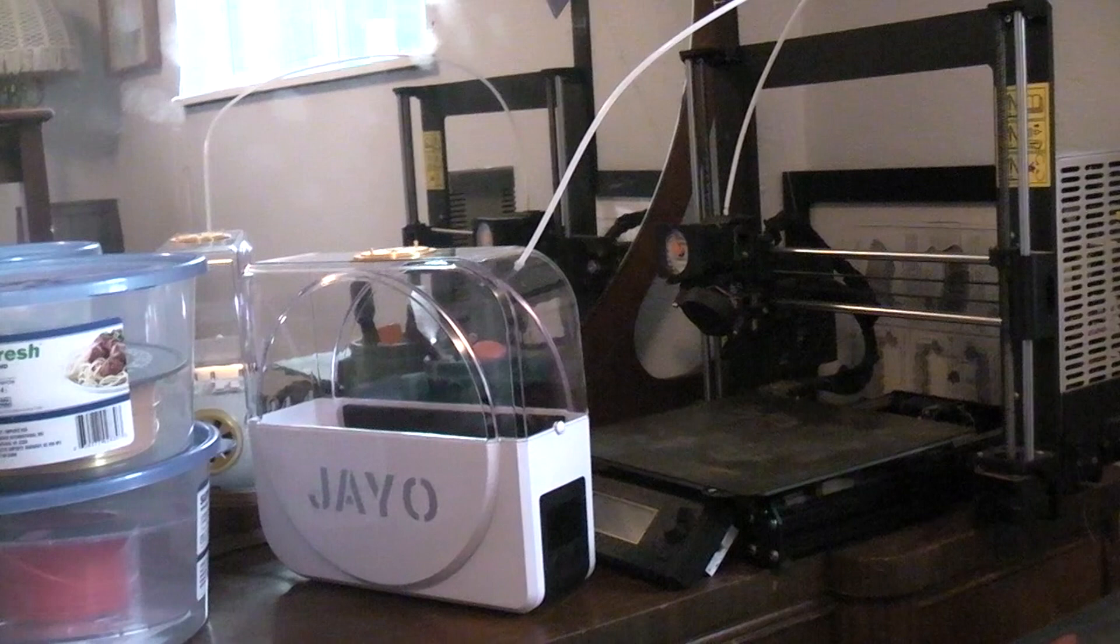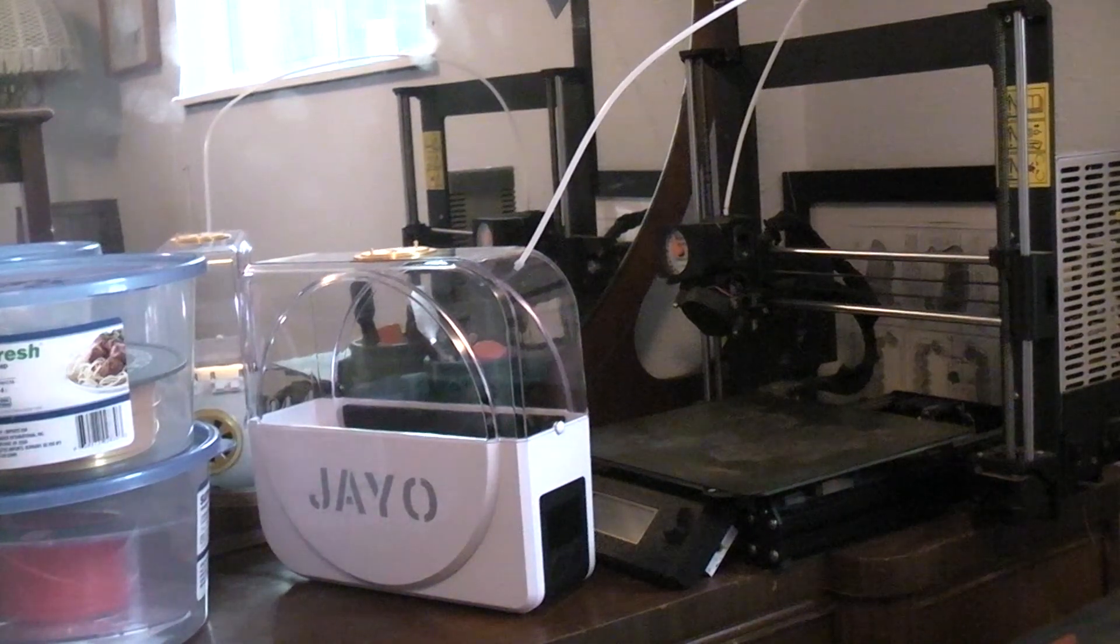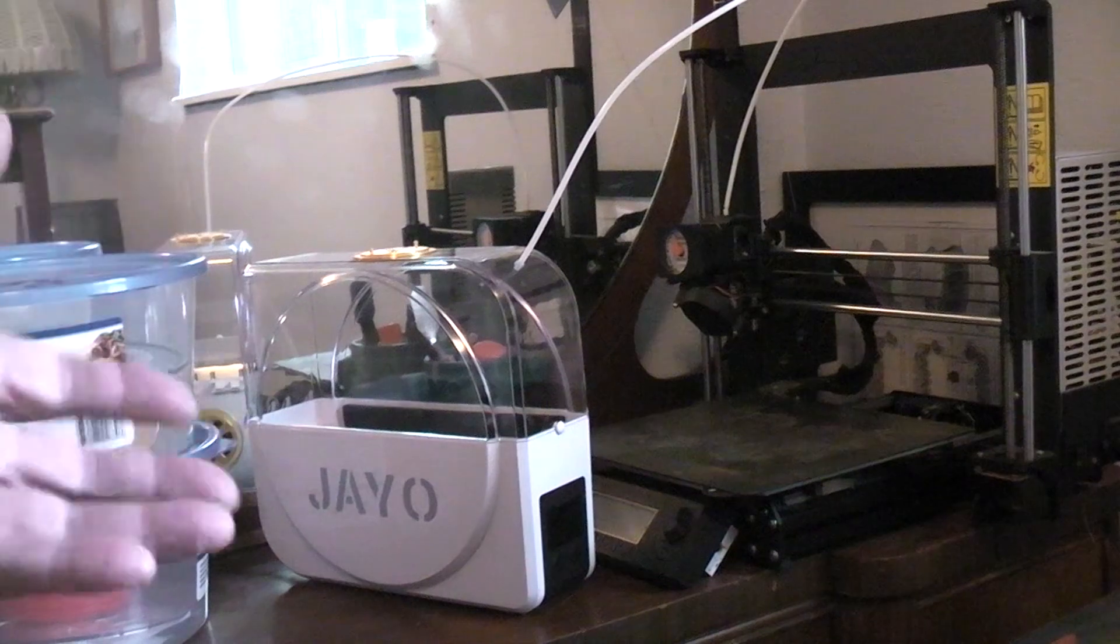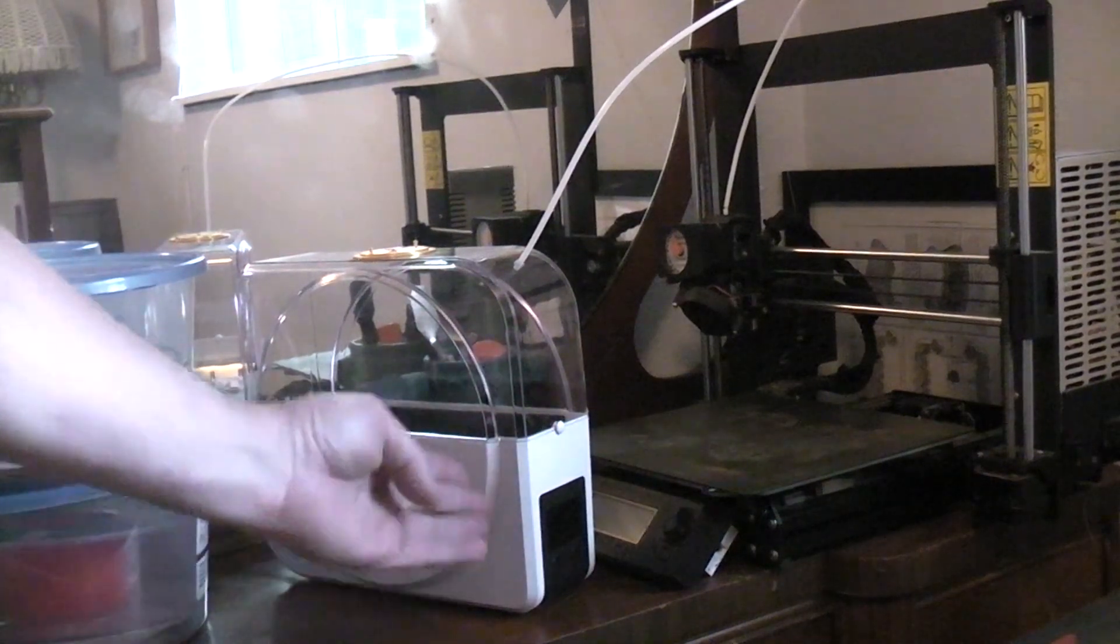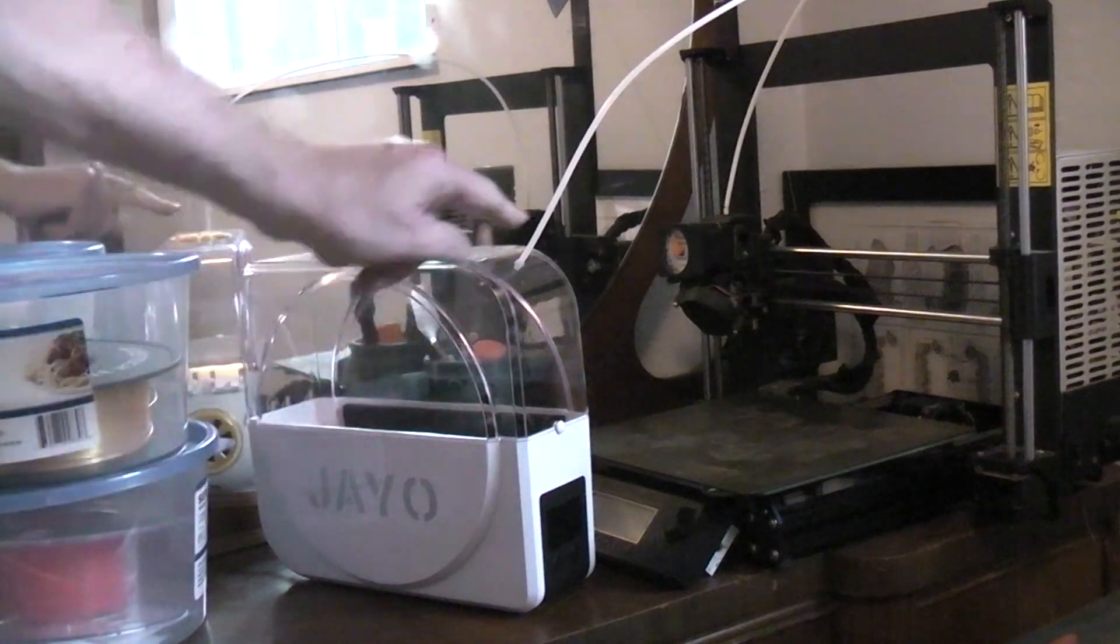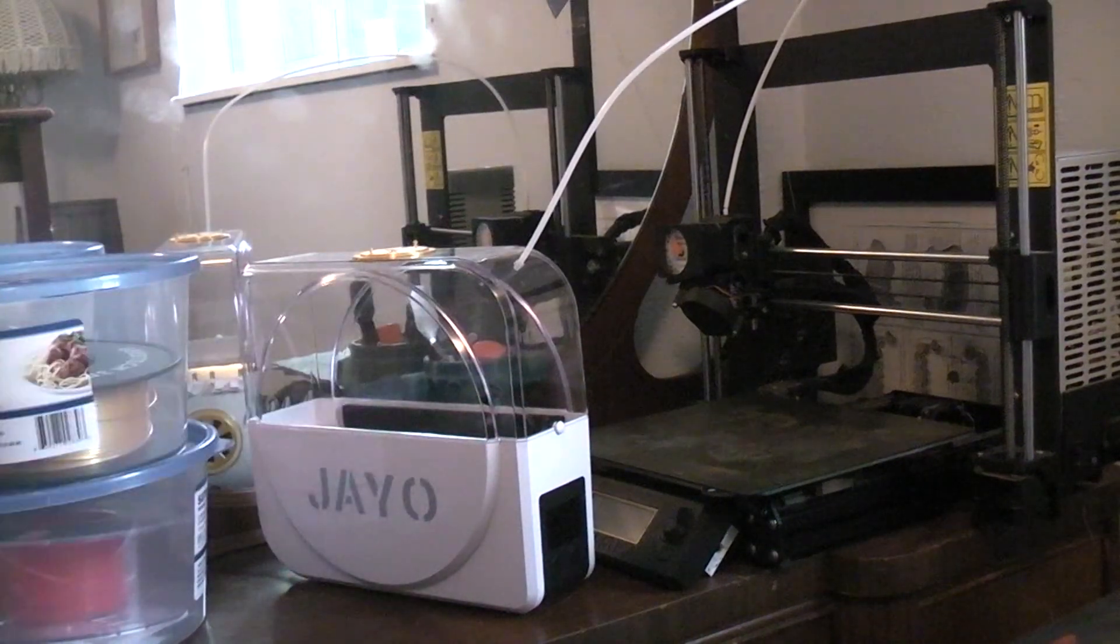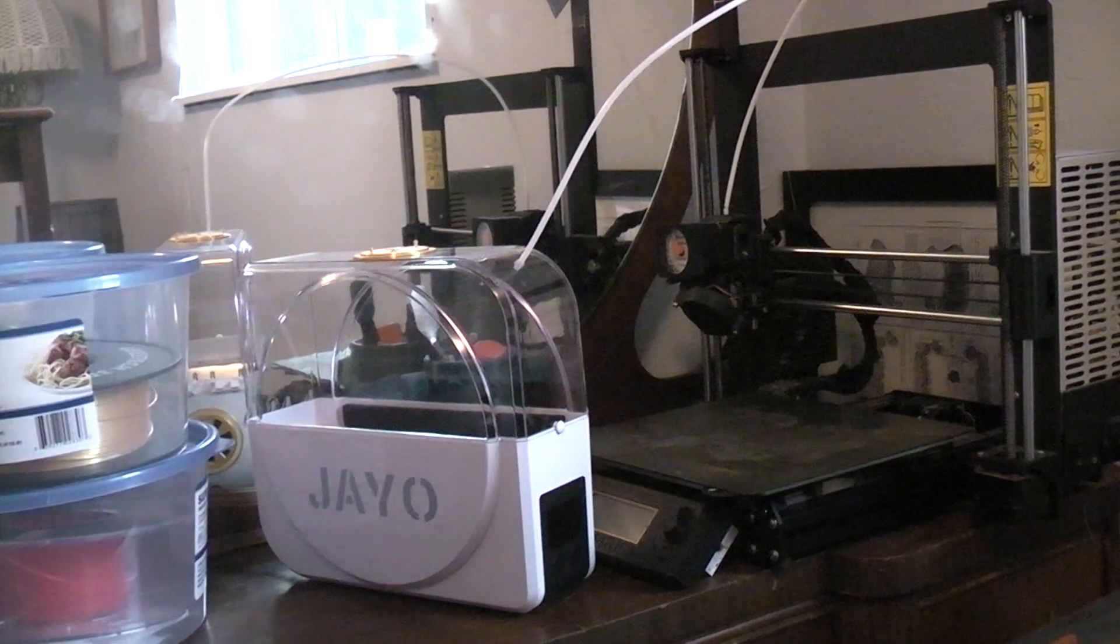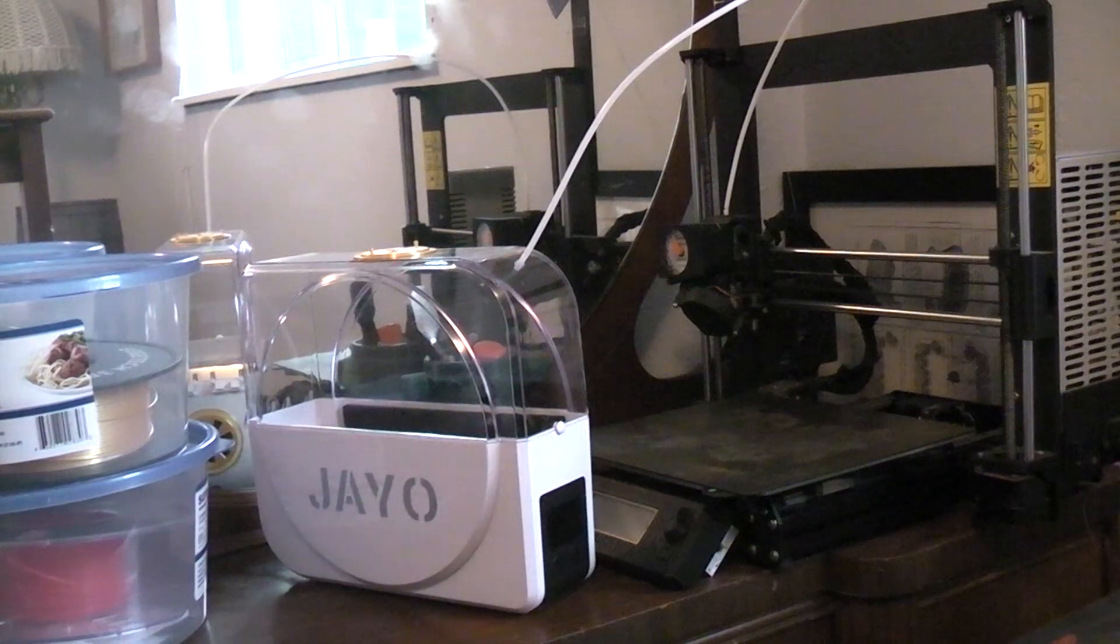For those who don't know, the point of this is there's a heater inside here. You put your roll of filament inside the box. Filament can then pass through this tube and go directly to your printer. It keeps the filament dry, takes the moisture out, so you'll have less stringing and less bubbles and boogers all over your print.